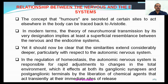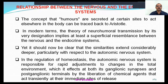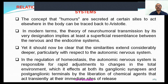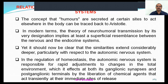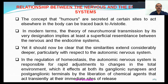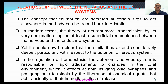The relationship between the nervous system, the enteric system, and the endocrine system is direct. The concept that chemicals are secreted at certain sites to act elsewhere in the body can be traced to Aristotle — neurohumoral transmission means humors are involved in nervous transmission. The theory of neurohumoral transmission implies at least a superficial resemblance between the nervous system and the endocrine system, and this relationship is very well established.